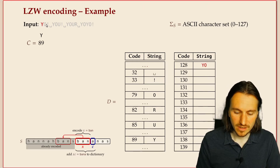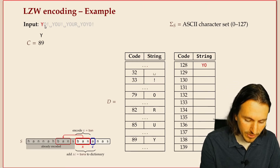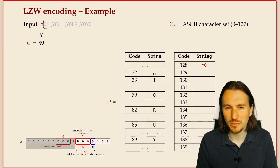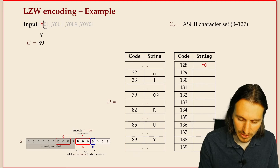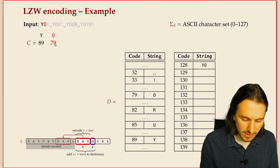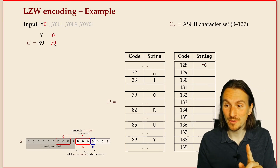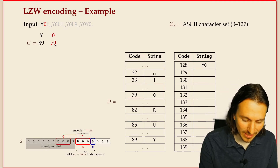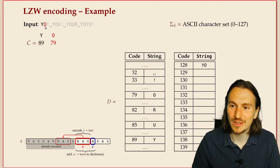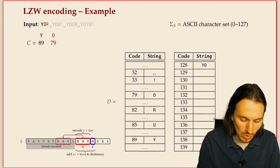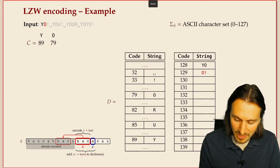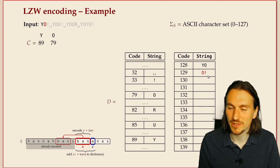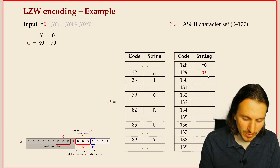Before moving to the next phrase, we add a new phrase to the dictionary: 'yo', since the next character after 'y' is 'o'. Then we start again — the longest match is just 'o' (a single character), so we output its code. Before moving on, we also add 'o!' to the dictionary, since the next character is an exclamation mark. That's the next slot in the dictionary.